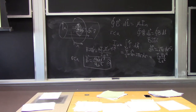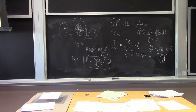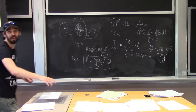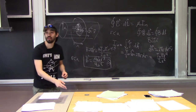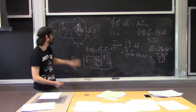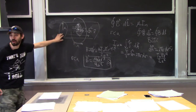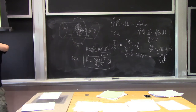Student question: can you explain when you need to have another shell on top, and in between the two shells with no current, does that mean you don't have any magnetic field? That's really more like the homework problem. Let me finish this problem and then I'll do the homework problem.